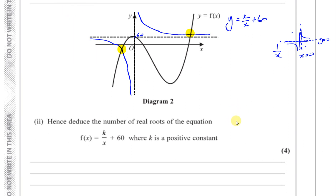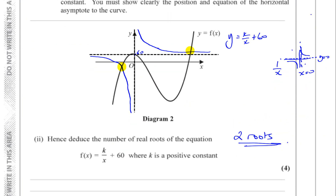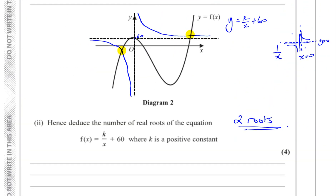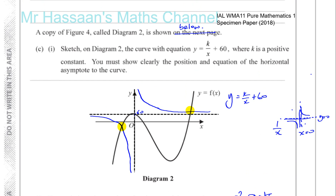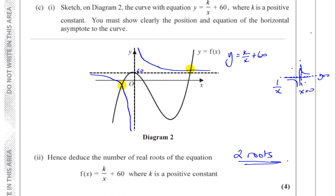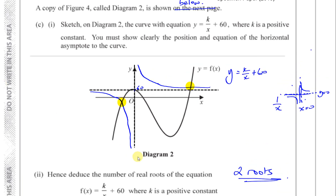They're not asking us to find what those two values are, just to state that there will be two roots. Those four marks are for both parts of the question: one for sketching and one for mentioning two roots. That's the answer finished for question number eight.